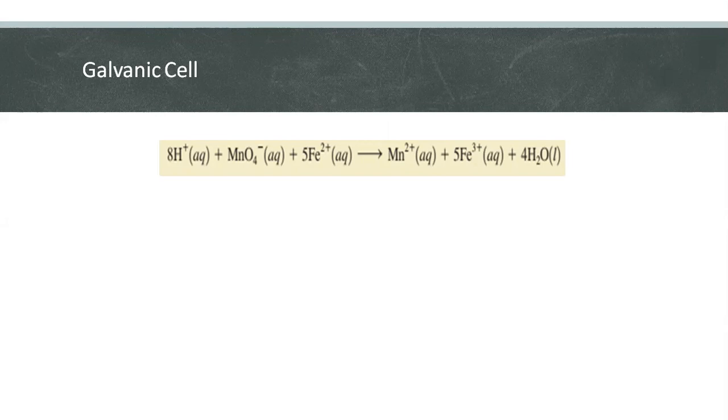To understand how a redox reaction can be used to generate a current, let's consider this reaction between permanganate and iron. This is our balanced acidic equation.